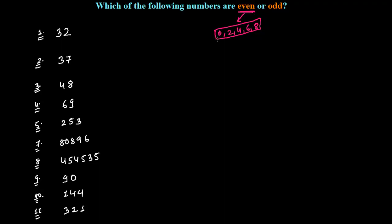And those numbers which end with 1, 3, 5, 7, or 9 are odd numbers.